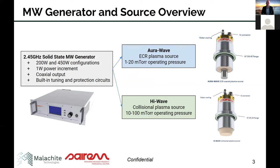In terms of the plasma sources Serum has developed, there are two configurations: the Orowave and the Hiwave. They are both powered by the solid-state generator and have a coaxial input, mounting to a chamber on a KF-40 flange. The Orowave is an ECR-style source with a small magnet at the tip, operating in a lower pressure regime — typically 1 to 10 millitorr. The Hiwave doesn't have magnets and is treated as more of a collisional plasma source, operating at higher pressure. Both sources are very high density, and Serum has done measurements to demonstrate the plasma density these sources are able to create.